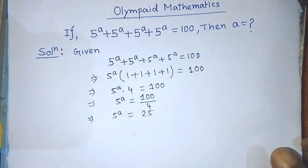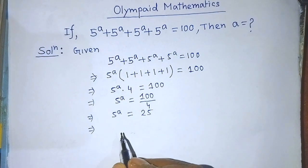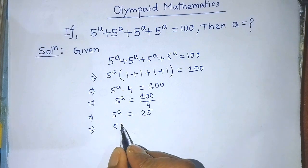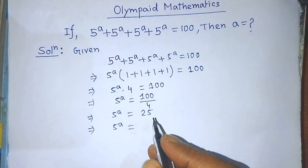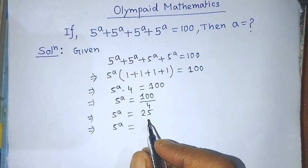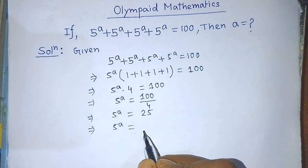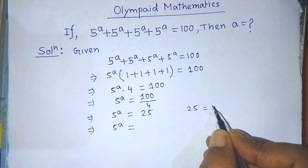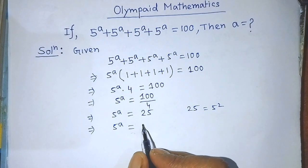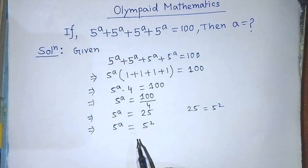So 5 to the power A is equal to 25. To find the value of A, we have to write the exponential form of 25 on the right hand side of this equation. The exponential form of 25 is 5 squared, so on the right hand side we write 5 to the power 2.